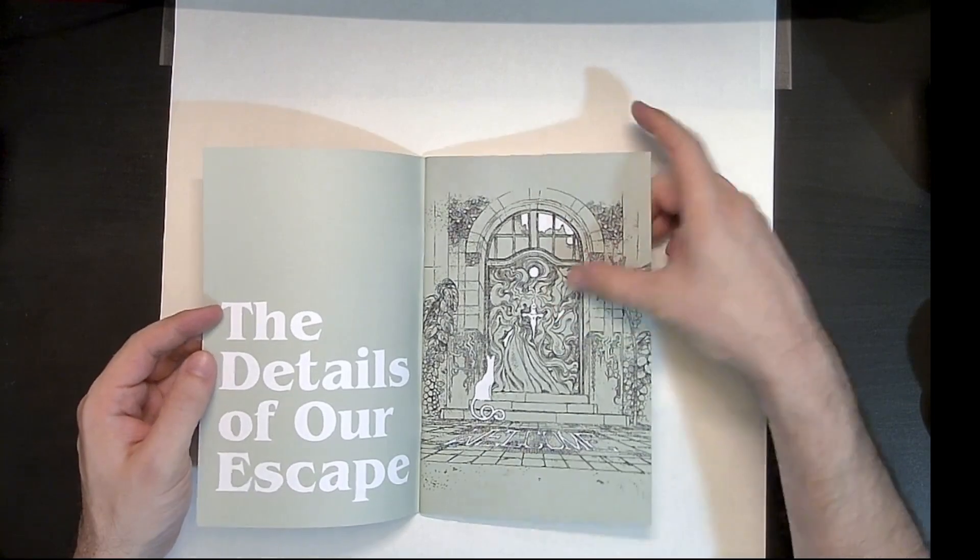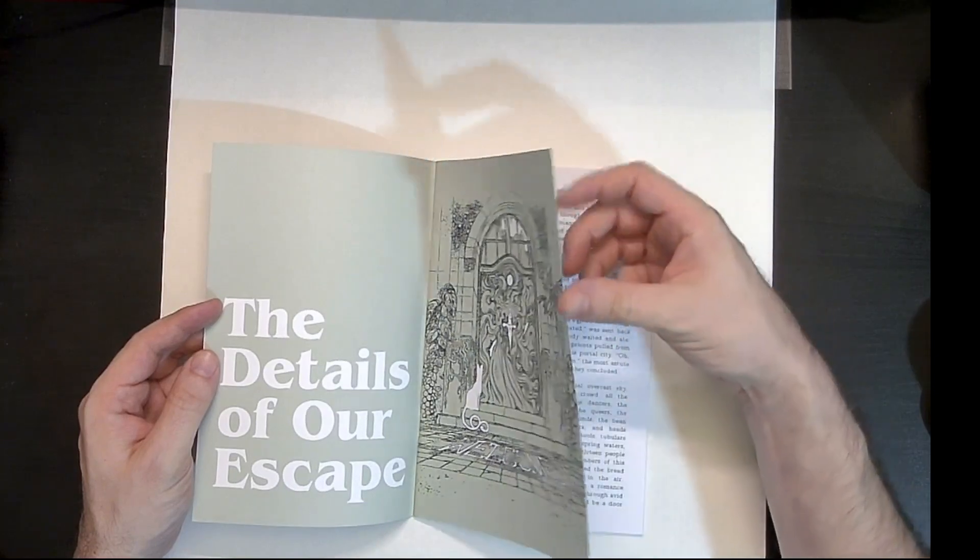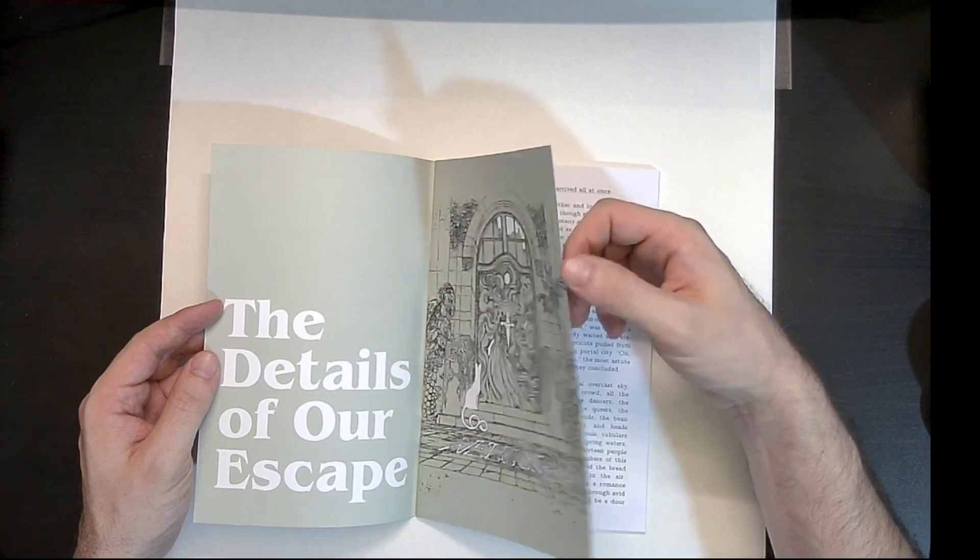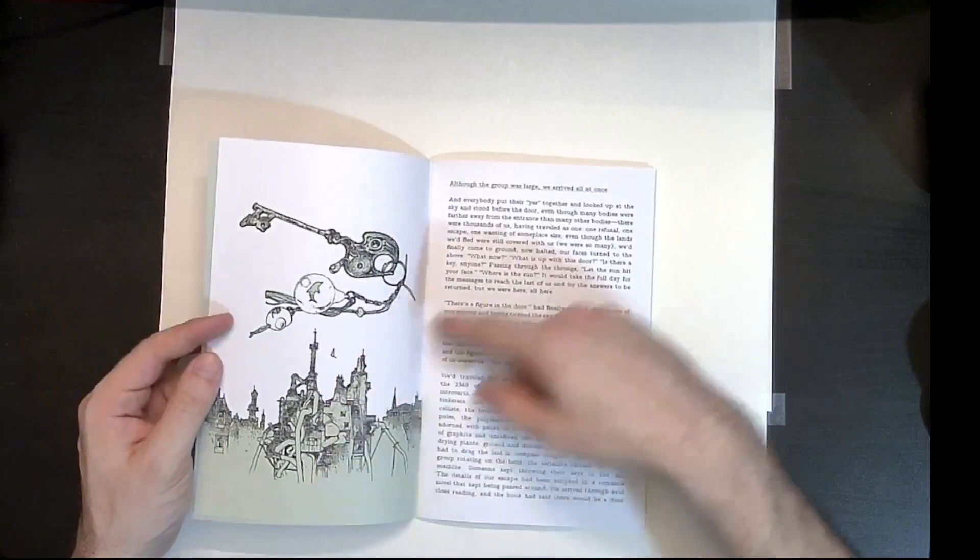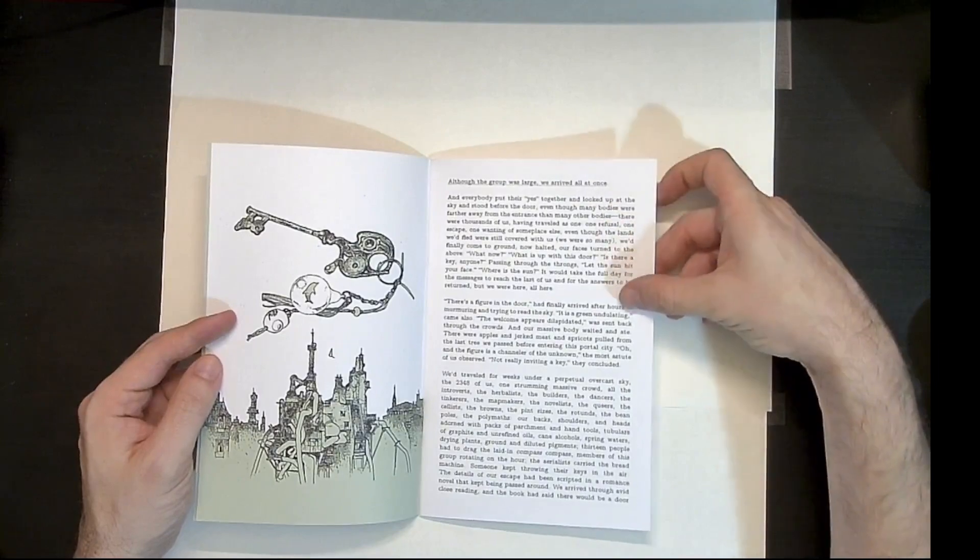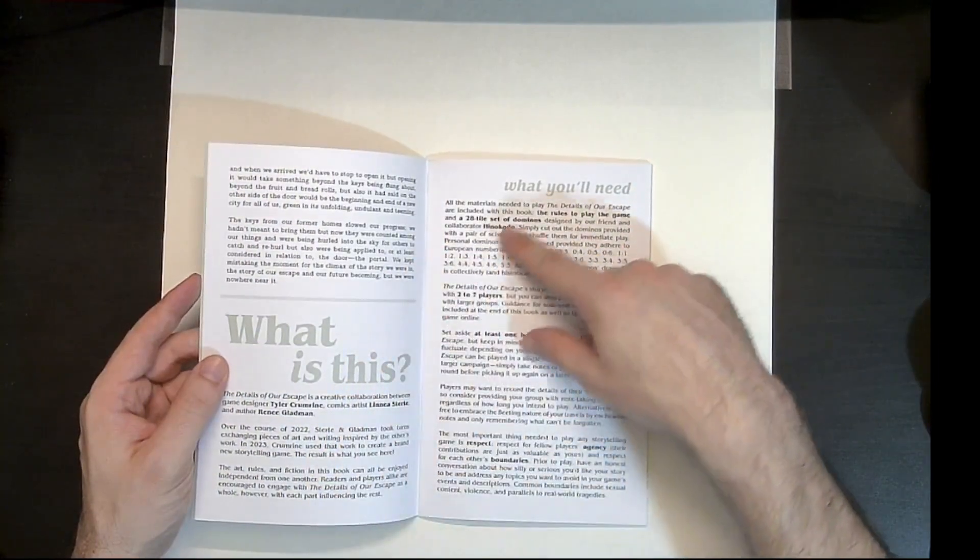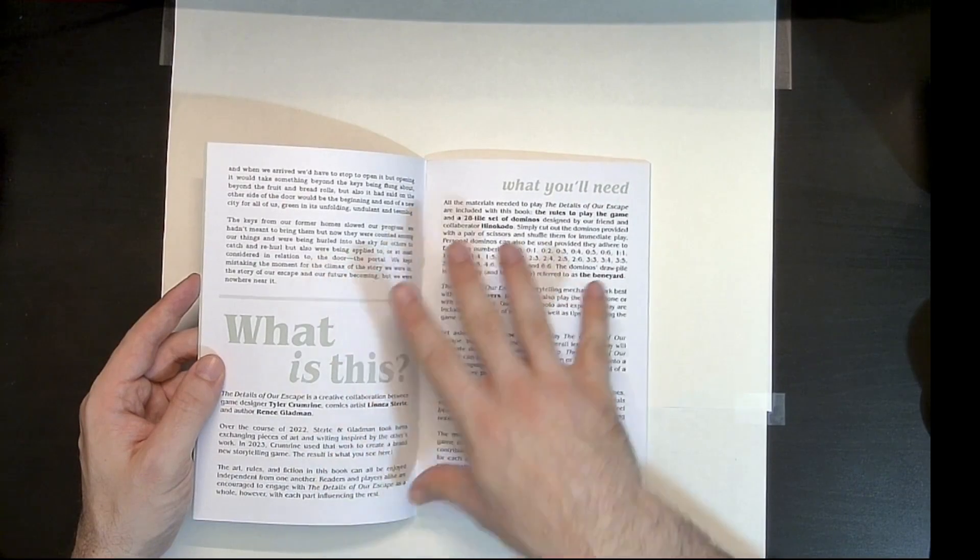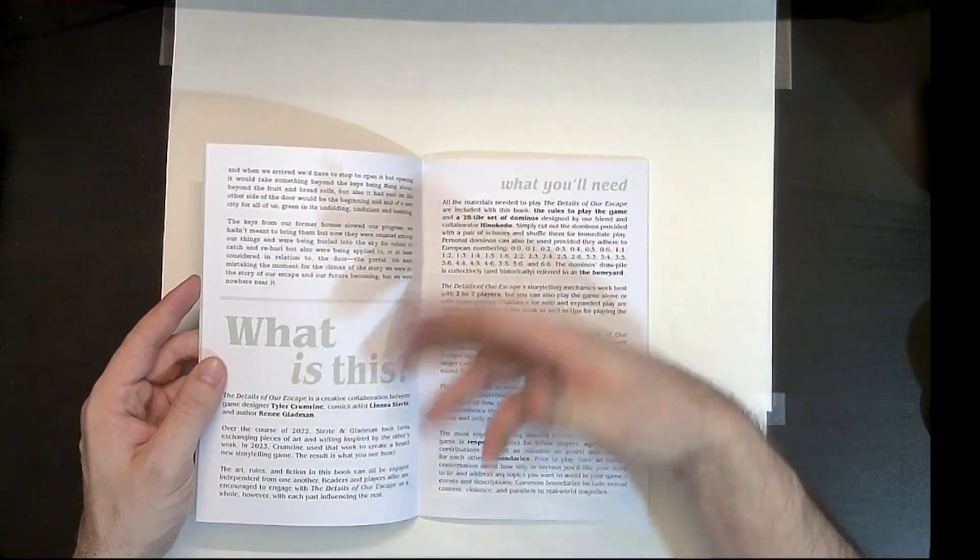So opening this up here, we have our title on the inside, which is an interesting design. And here we have the door. I'm assuming this is supposed to be symbolizing the door that they mentioned. The actual pages on the inside, this feels like it's probably like 28 or 32 weight paper. So, but again, still good high quality. And we do have at least partial color. So here we have just sort of describing the fiction, basics of what this is.